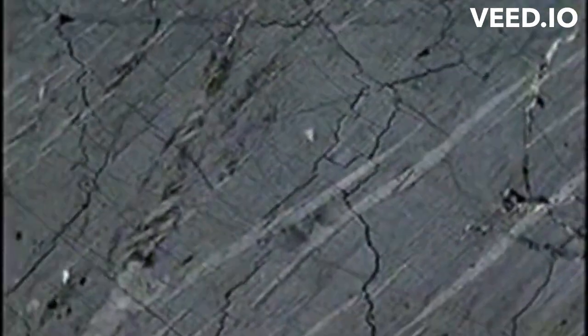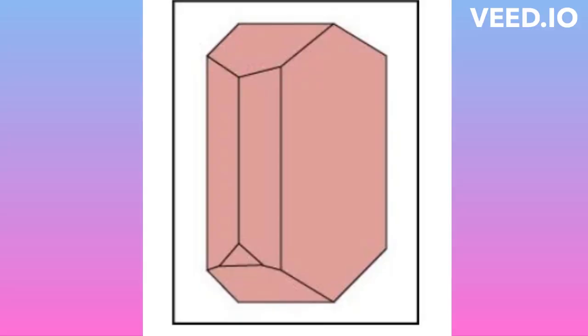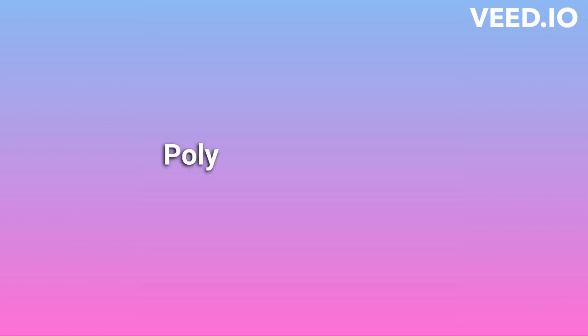Microcline and/or orthoclase are essential components of many igneous rocks, such as the plutonic rock types of granite and syenite. Their volcanic equivalents, such as rhyolite and trachyte respectively, contain the high-temperature polymorph called sanidine. Microcline and/or orthoclase are also important in many metamorphic rocks, particularly in gneisses. Potassium feldspar is also widely used as a component in the manufacture of ceramics.